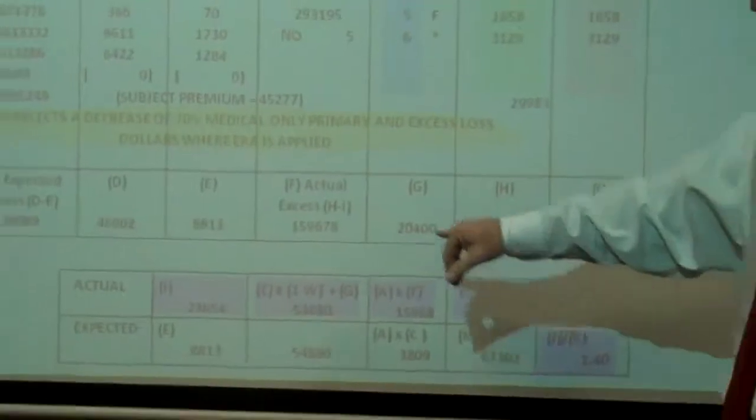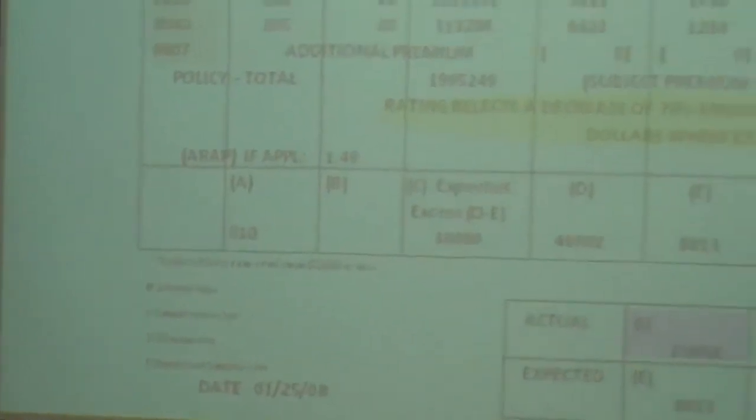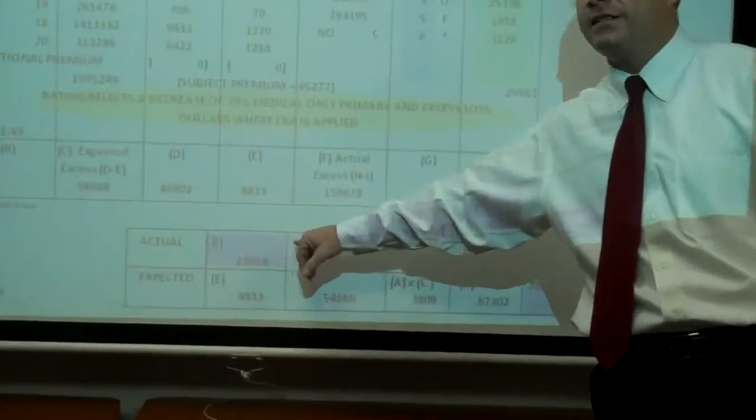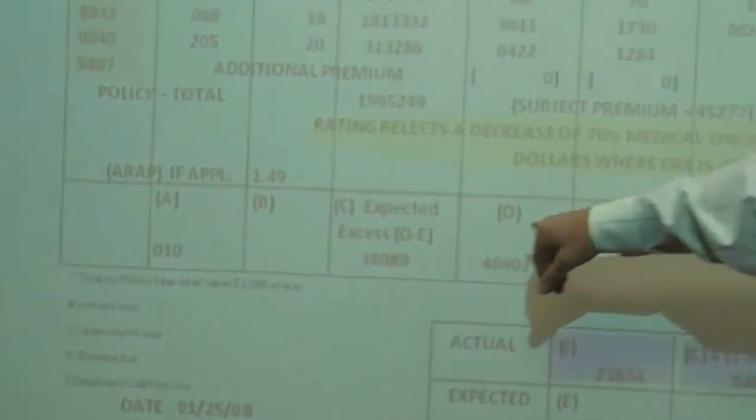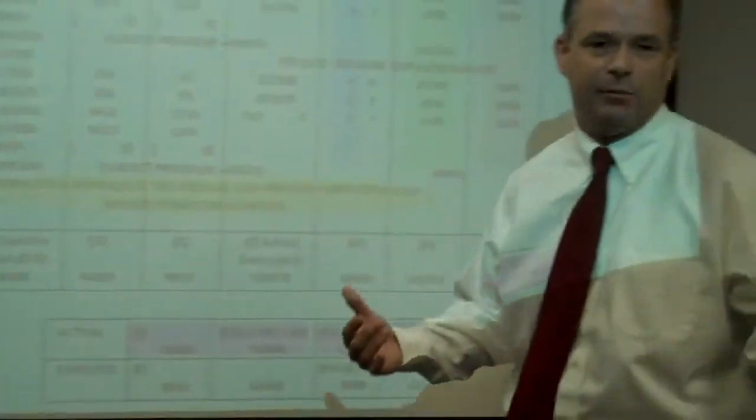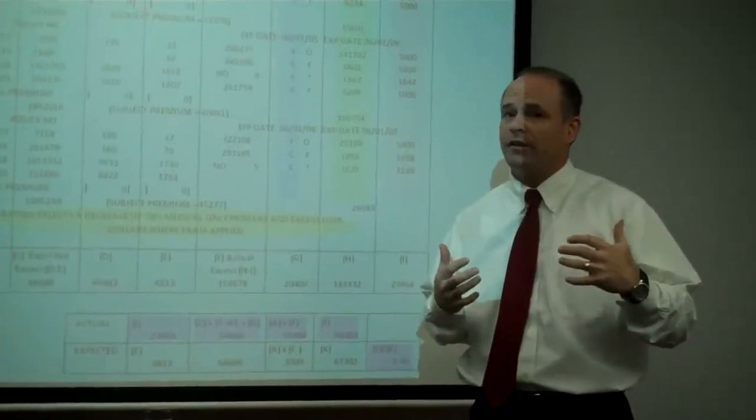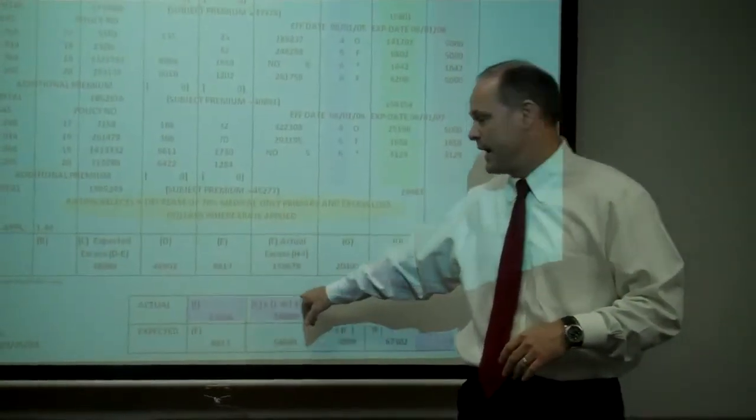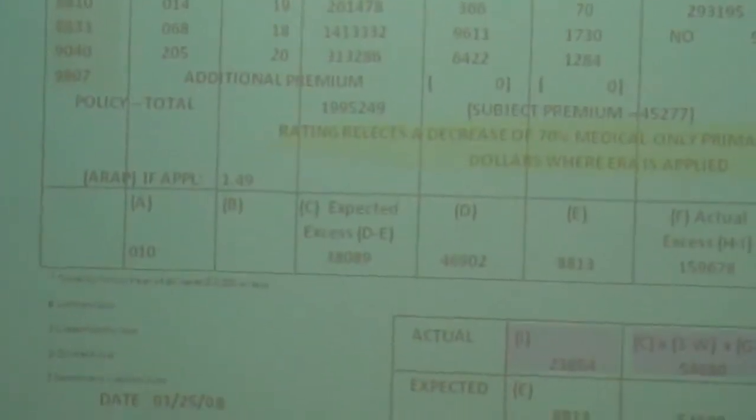After that, this number right here, the weighted value or W value, which is .10, starts to take effect. So if you have a $10,000 claim, $5,000 is going to flow into here. And then the other $5,000 is going to flow into this box called the rateable excess. But it's going to be taken times this weighted value. This particular insured is getting a 90% discount on what's flowing into the rateable excess.